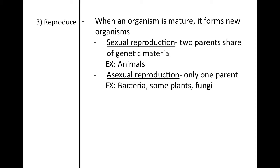With asexual reproduction, only one parent is involved — you do not need two or more parents. For example, bacteria, some plants, and some fungi reproduce asexually.